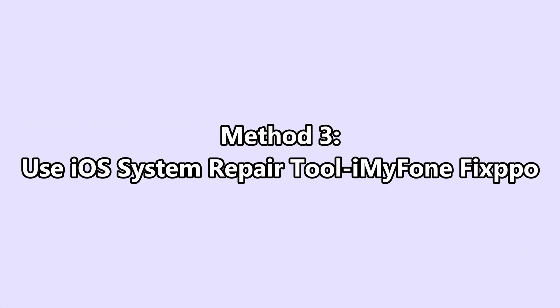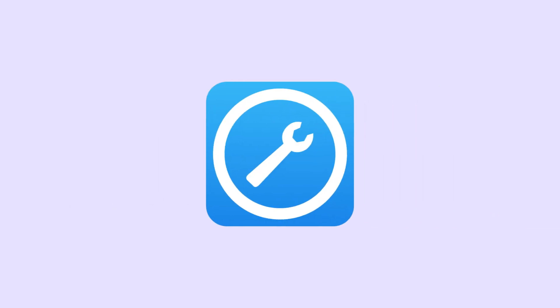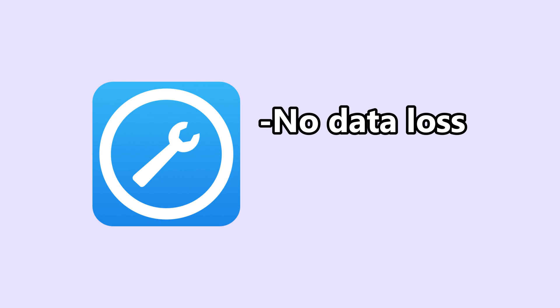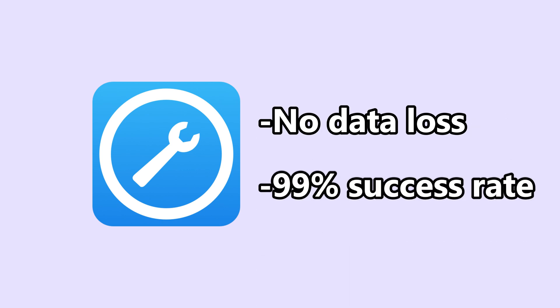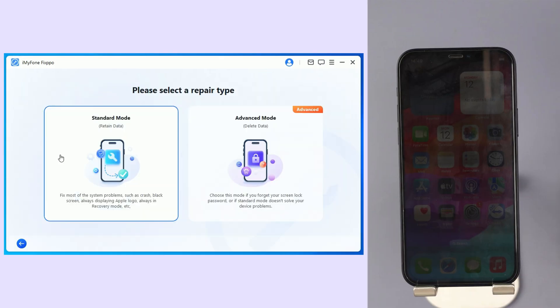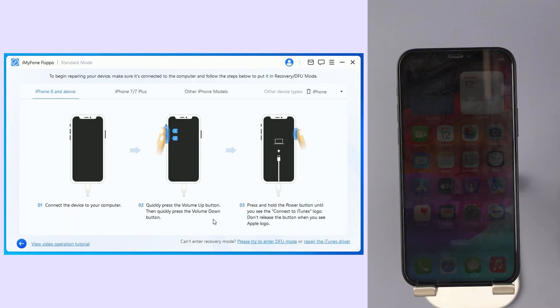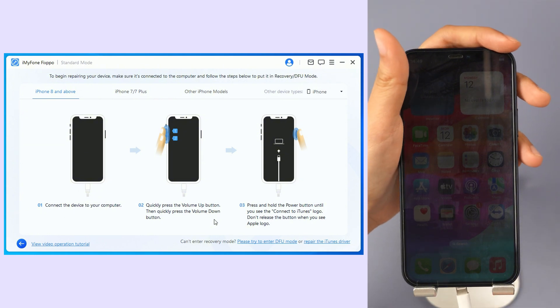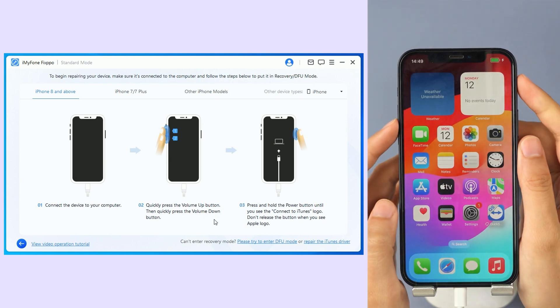Method 3: Use iOS System Repair Tool — iMyFone Fixbow. Use iMyFone Fixbow to fix this problem without losing your data. It is the most convenient way to fix iPhone stuck on loading screen or update bar, with a 99% success rate. You can find the download link in the description below. Now open Fixbow, click Start Repair, and click Standard Mode. Connect your iPhone to the computer with a USB cable and trust this computer.